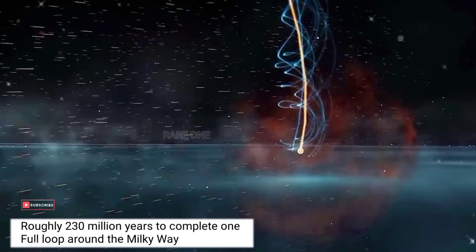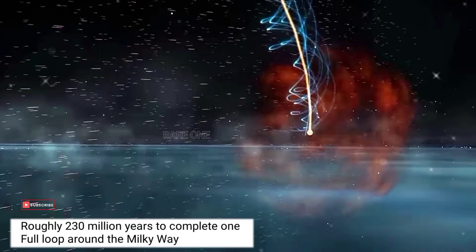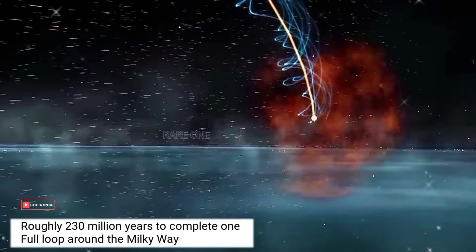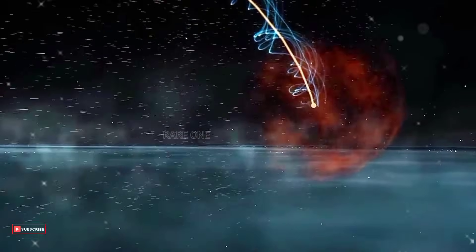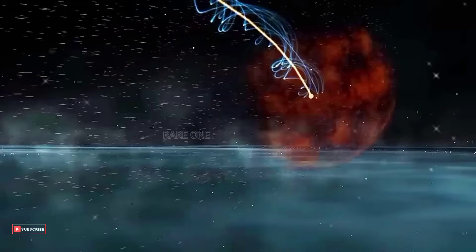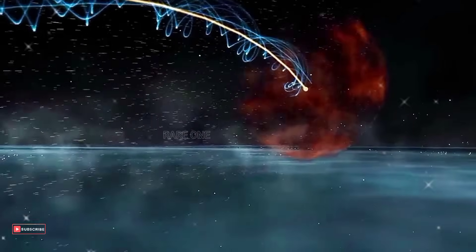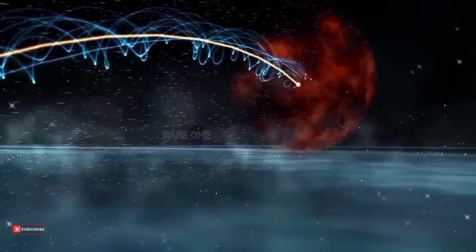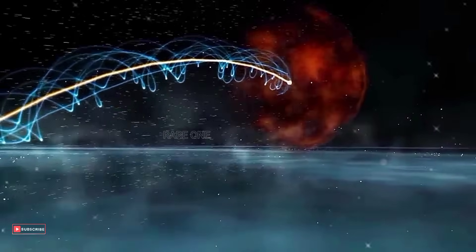It takes our Sun roughly 230 million years to complete one full loop around the Milky Way. Wrap your head around that—longer than the dinosaurs roamed the Earth, and more than 750 times longer than us, Homo sapiens, have been around.